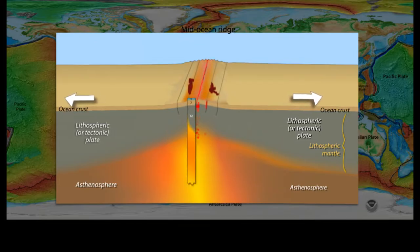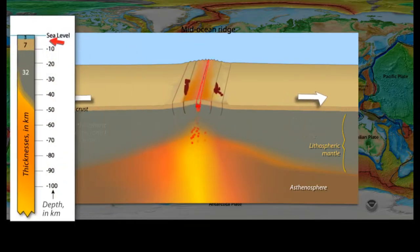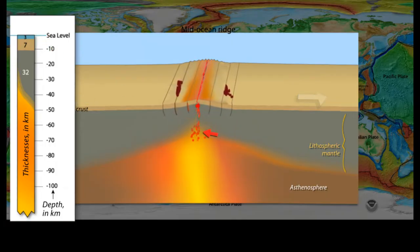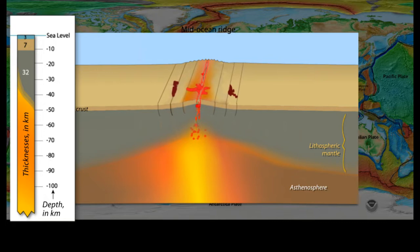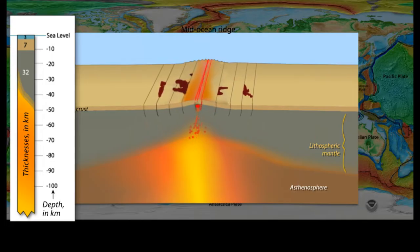Beneath the crust at the spreading ridge, there is only a thin layer of lithospheric mantle because it is unusually hot in the upwelling zone. This hot, and therefore lower density mantle rock, supports the 2,500 meter elevation of the spreading ridge.